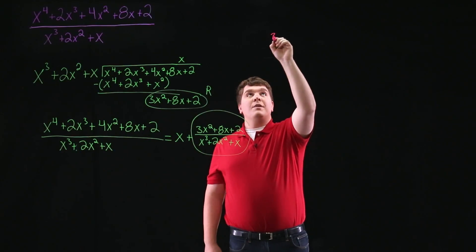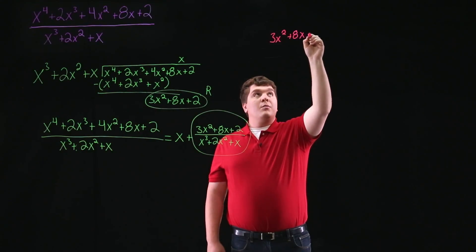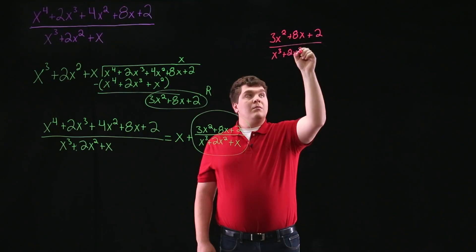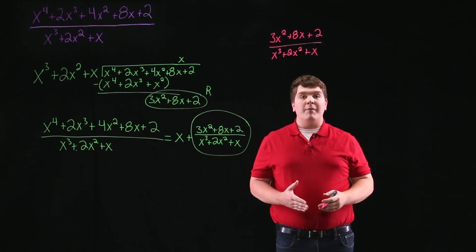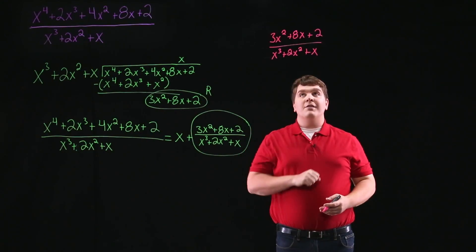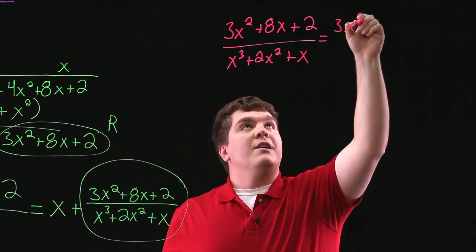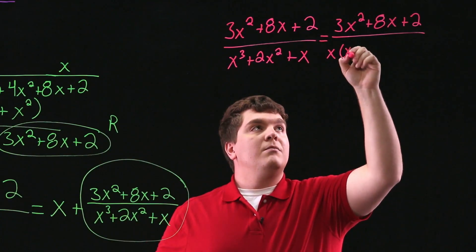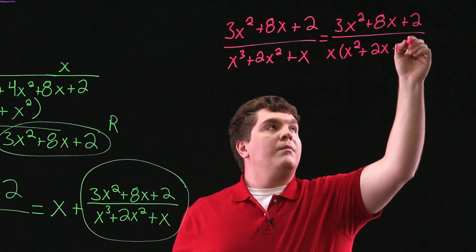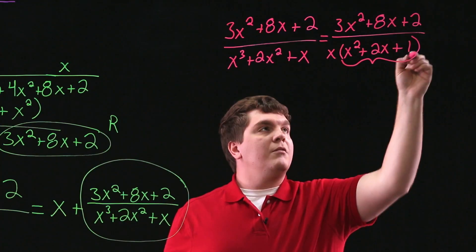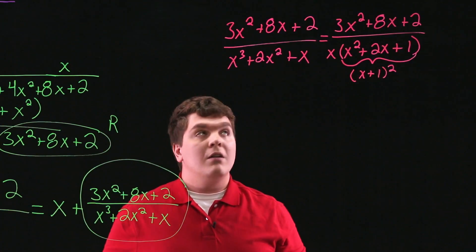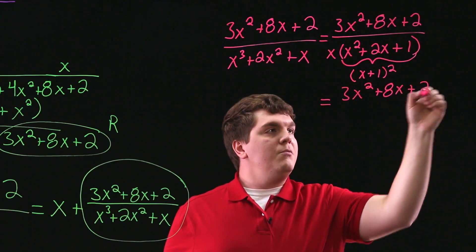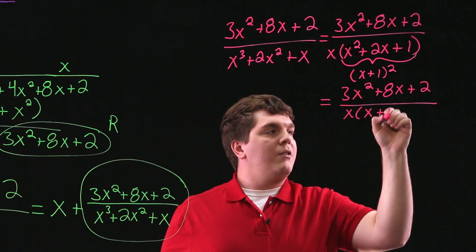So what we're looking at is 3x squared plus 8x plus 2 all divided by x cubed plus 2x squared plus x. Now here we want to factor the denominator. We'll begin by factoring out an x since each of the three terms has a factor of x in it. So this is equal to 3x squared plus 8x plus 2 divided by x times x squared plus 2x plus 1. We also know that x squared plus 2x plus 1 will factor into x plus 1 quantity squared. So what we have is 3x squared plus 8x plus 2 divided by x times x plus 1 quantity squared.